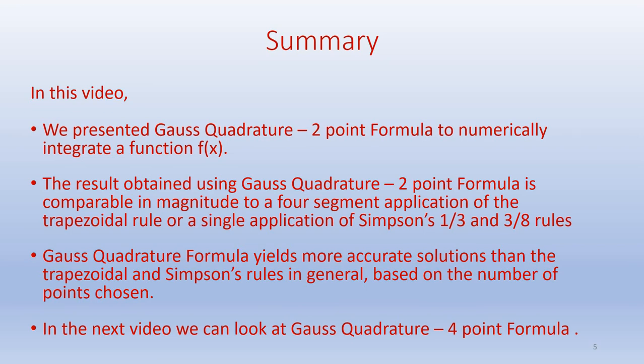Gauss Quadrature formula yields more accurate solutions than the trapezoidal and Simpson's rule in general, based on the number of points chosen, and is an efficient method. In the next video we can look at a Gauss Quadrature four-point formula which can provide more accurate solutions.